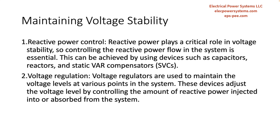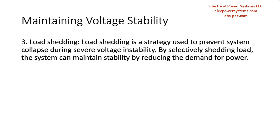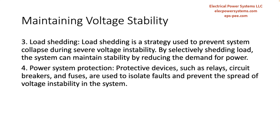Voltage regulators are used to maintain the voltage levels at various points in the system by controlling the amount of reactive power injected into or absorbed from the system. Load shedding is a strategy used to prevent system collapse during severe voltage instability; by selectively shedding load, the system can maintain stability by reducing the demand for power. Protective devices such as relays, circuit breakers, and fuses are used to isolate faults and prevent the spread of voltage instability in the system.